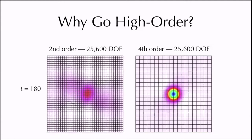By the time we get to t equals 180, you can see some slight changes for the fourth order scheme, whereas for the second order scheme there's pretty much nothing left. Both simulations have equivalent numbers of degrees of freedom, so at some level you can argue they have a comparable computational cost. But you can say that since the degrees of freedom in the high order scheme are tightly coupled, the high order scheme is actually cheaper to implement if you do it efficiently.